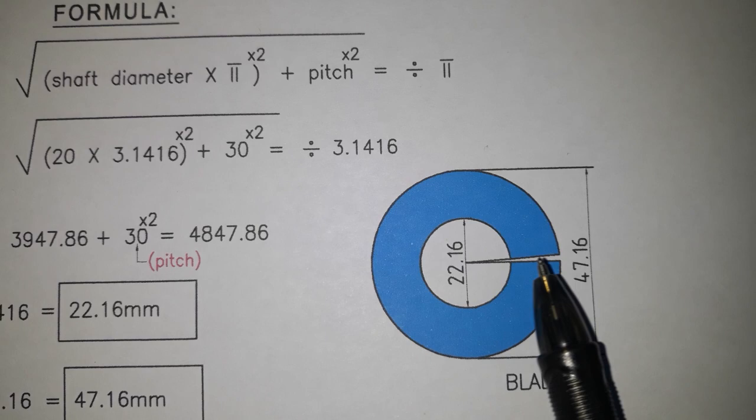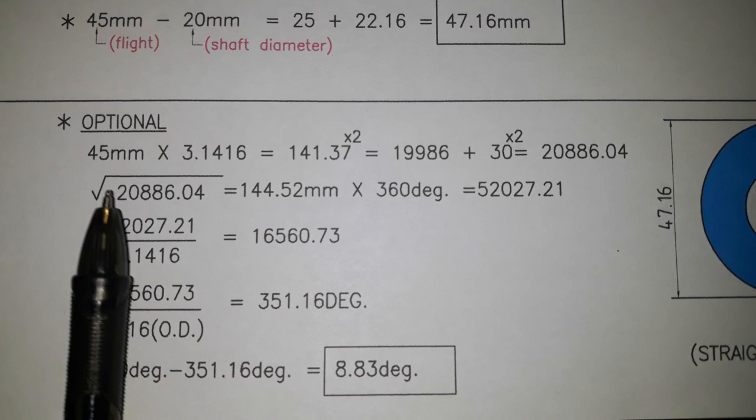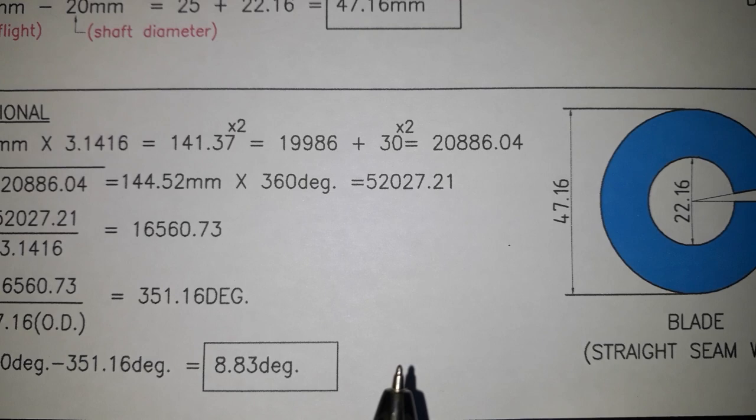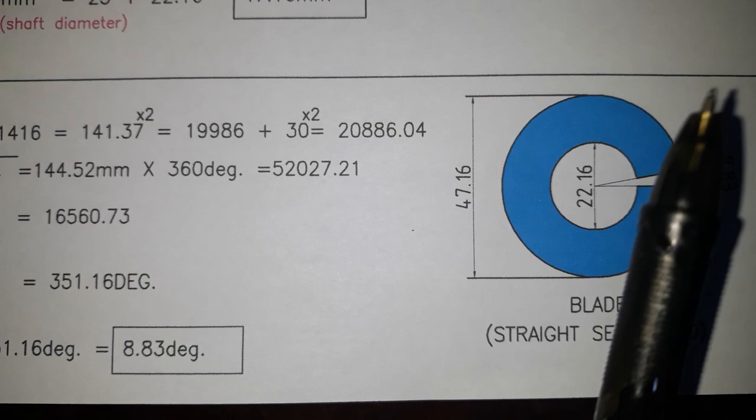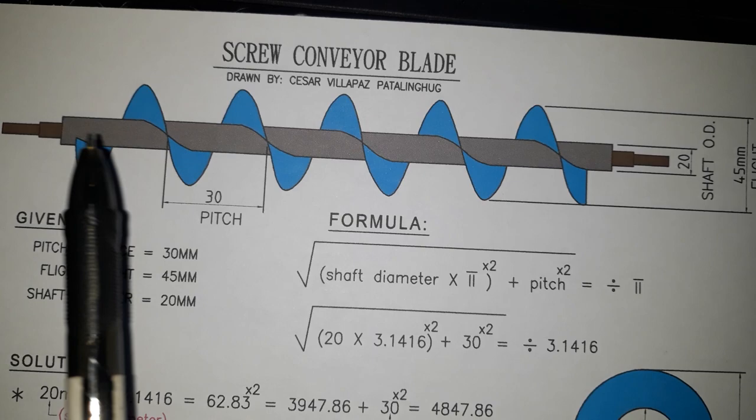Then we have here a cut for the welding. We have here down below the optional section, and this optional is used only for the calculation of the degrees, for you to be able to make your seam weld straight with the shaft.